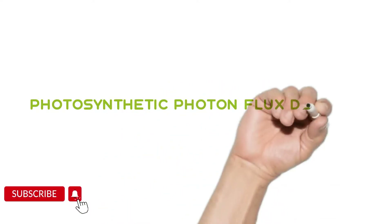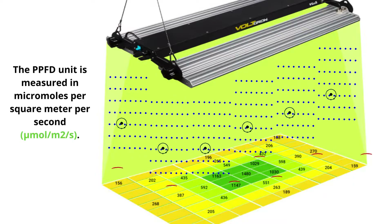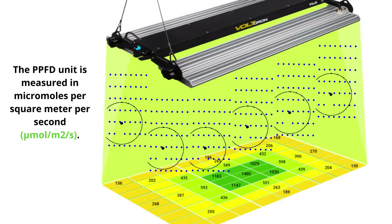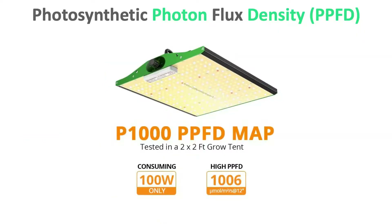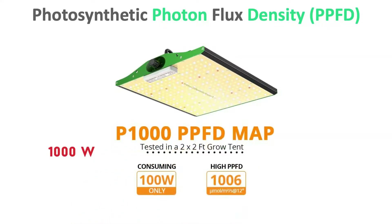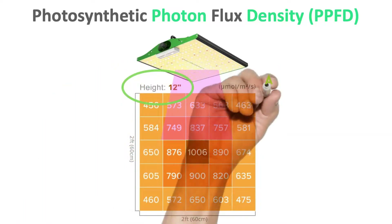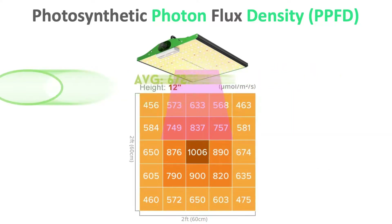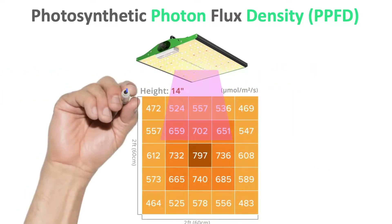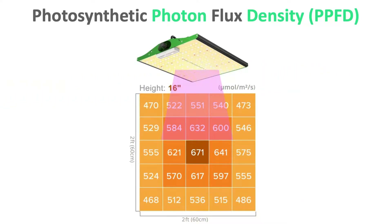Photosynthetic Photon Flux Density (PPFD) is the number of photons falling in an area, measured in micromoles per square meter per second. This is like calories for plants — they use it for energy. For example, a 1000-watt grow light placed in a 2x2 grow tent at 12 inches has an average PPFD of 672. When placed at 14 inches, the average drops to 580.